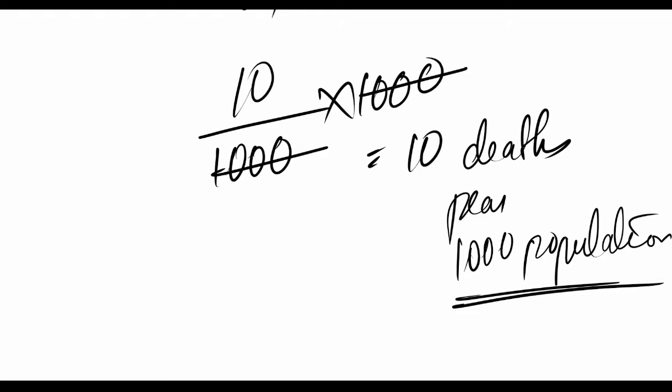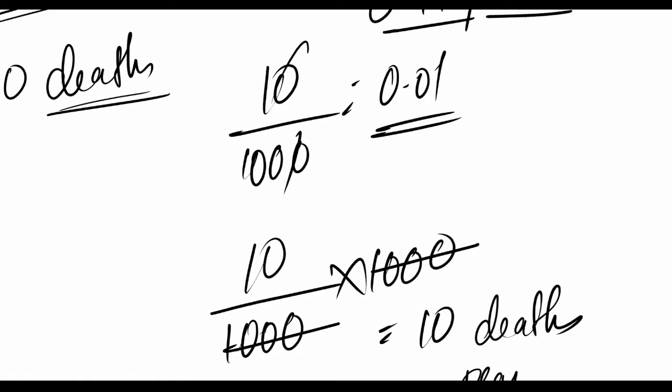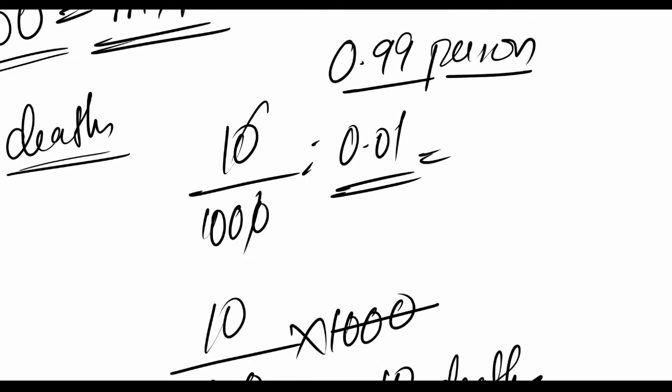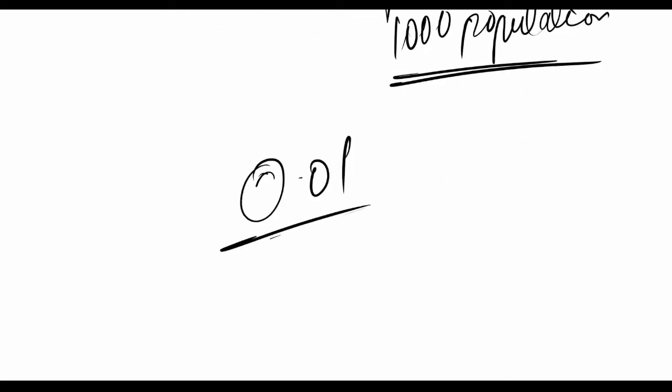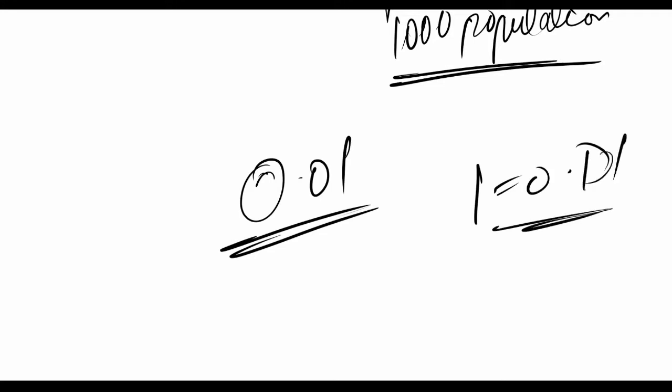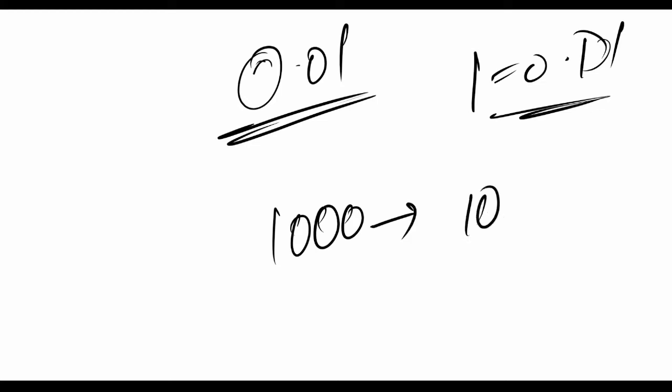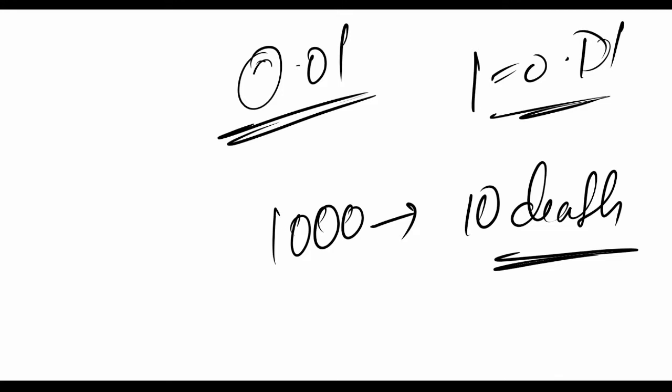You can't say 0.01 person died for every 10 people surveyed. We use a multiplier to give the mathematical result an applicable, understandable meaning. If you say the death rate is 0.01 it's difficult to grasp, but if you say 10 deaths occur per 1000 people, it's more imaginable, more understandable, and more feasible. That's the purpose of the multiplier.